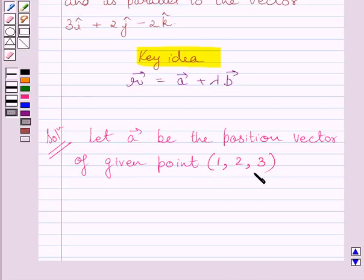Let a vector be the position vector of the given point. We know the coordinates of the given point are (1, 2, 3). We can write a vector equals i plus 2j plus 3k.